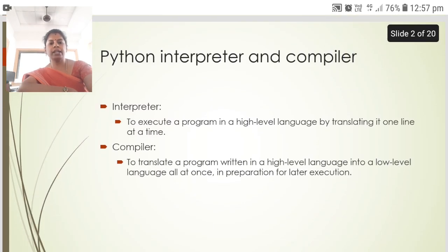Next is Python interpreter and compiler. Interpreter is to execute a program in a high-level language by translating it one line at a time. Compiler is to translate a program written in high-level language into a low-level language all at once in preparation for later execution.